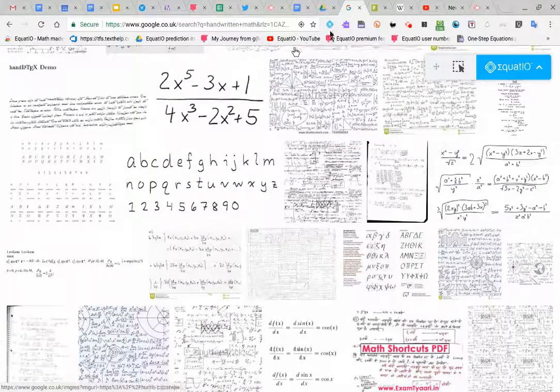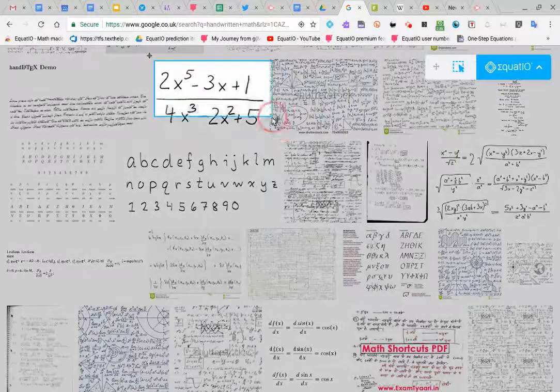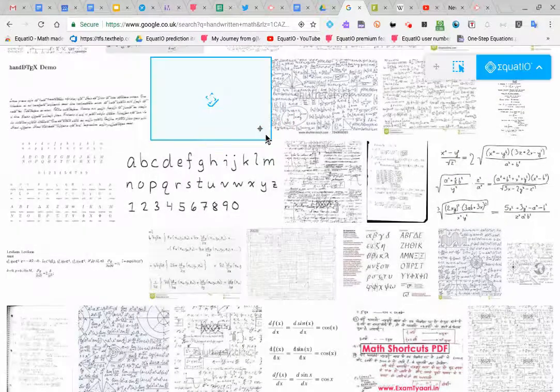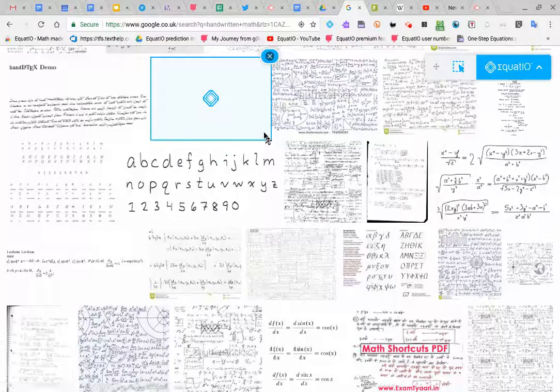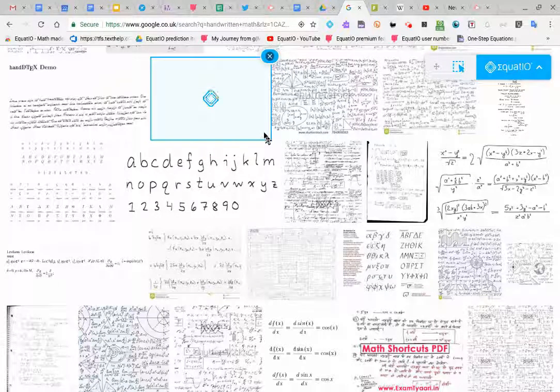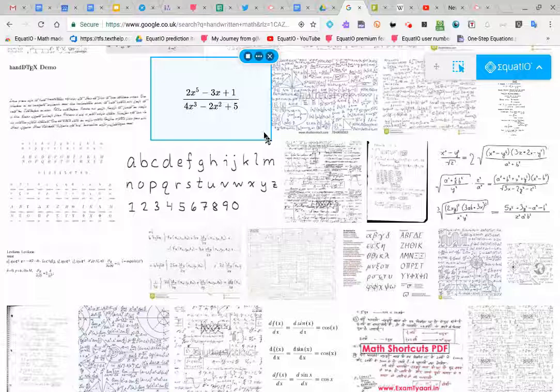Again, anywhere on the web, if I have some handwritten stuff, I just click on this button, and then EquatIO will be able to take that, even if it's handwritten, tries to magically figure out what that math is behind it, reads it aloud, and also I can copy that for those accessibility people.